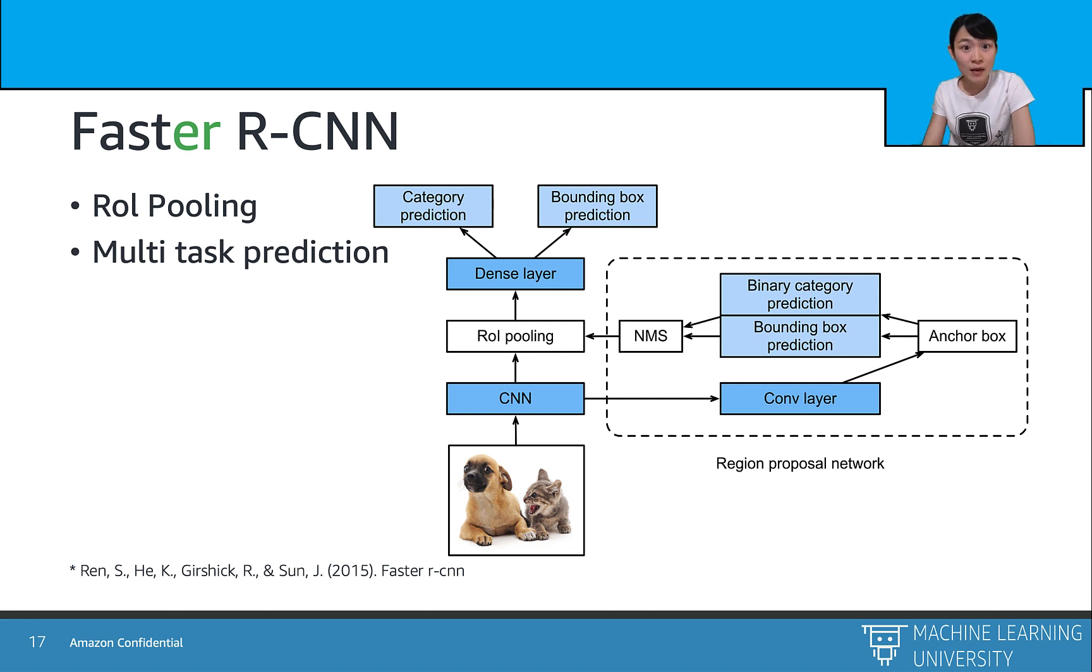Well, the step after regional proposal networks is following the same as the Fast R-CNN, with first the ROI pooling to pool the feature together and fit into the dense layer. What is more, it also uses multi-task losses for the category classifier and bounding box regressor.